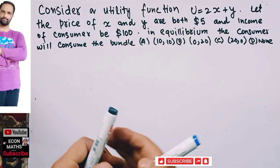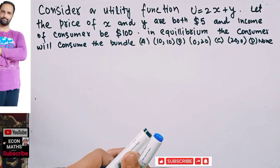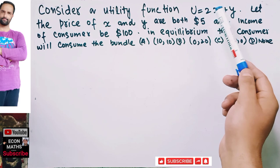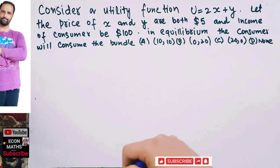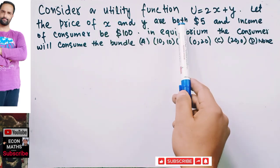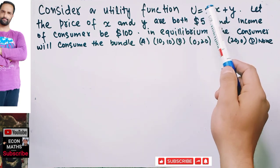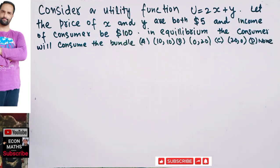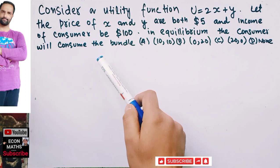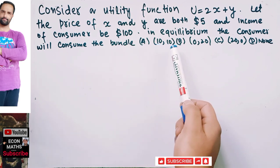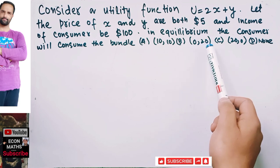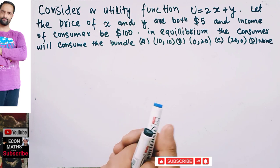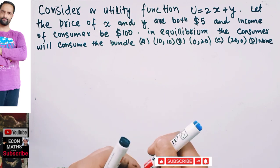In this video we will solve a question that was asked by a brother on the Telegram channel of Econ Maths. The question is: consider a utility function U = 2x + y, where x and y are two goods. The price of x and y are both five dollars. The options given are: (A) 10 units of x and 10 units of y, (B) 0 units of x and 20 units of y, (C) 20 units of x and 0 units of y, and (D) none of them.